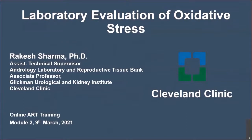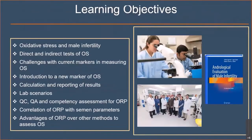Thank you, Dr. Agarwal. Good morning, everyone. The talk will be on laboratory evaluation of oxidative stress. The learning objectives are: to understand oxidative stress and its role in male infertility; examine some of the direct and indirect tests of oxidative stress; review the current challenges with current markers; introduce a new marker called the oxidation reduction potential or ORP; highlight some lab scenarios we encounter when using this test; and review the quality control associated with this test, including advantages and disadvantages of ORP.